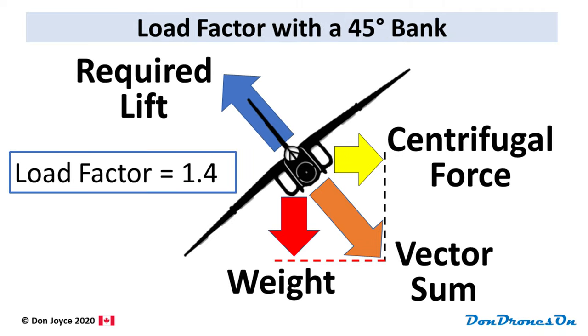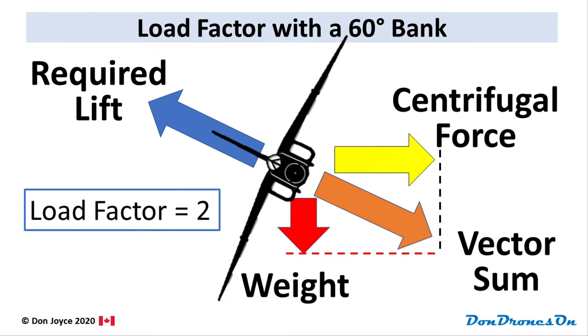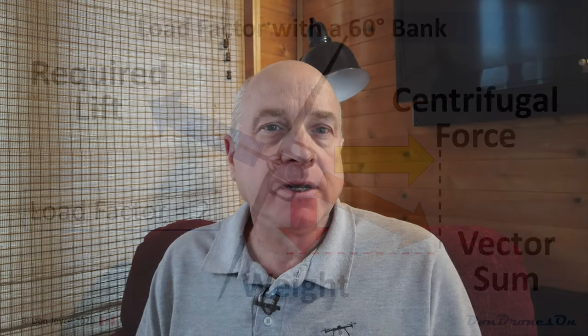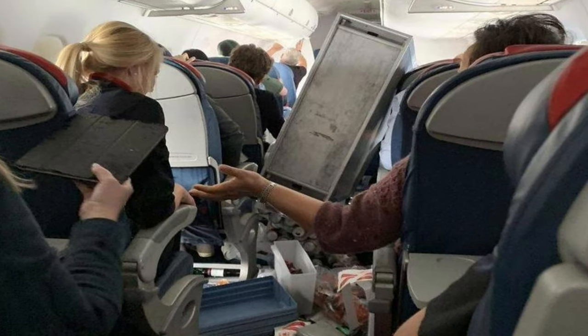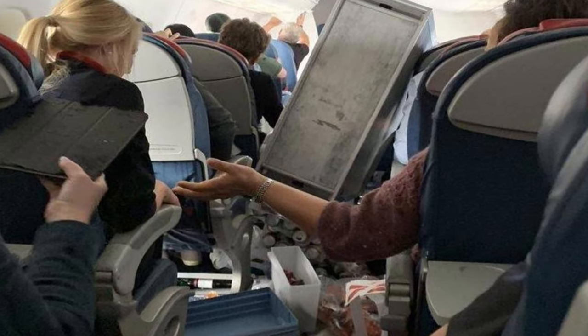If the bank is 45 degrees the load factor is about 1.4 g. With a steeper 60 degree bank the load factor is 2 g. Wind gusts and turbulence can also create temporary load factor increases and decreases. Think about the feeling of weightlessness when an aircraft hits an air pocket — that's the load factor going to zero.